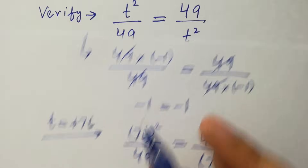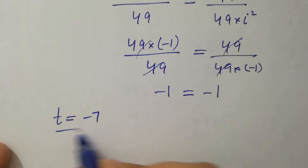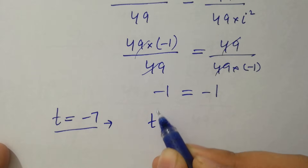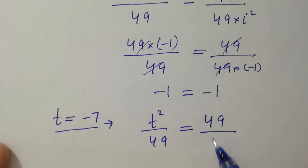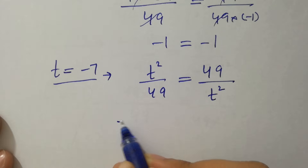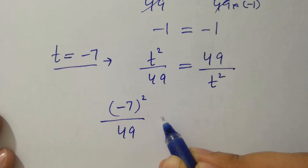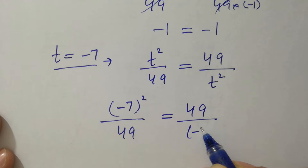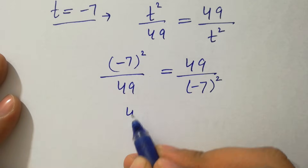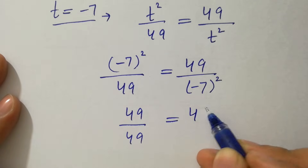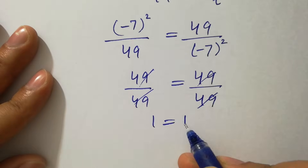Now putting t = −7 into the equation: (−7)² over 49 equals 49 over (−7)². Since 2 is even, (−7)² equals 49. So we get 49 over 49 equals 49 over 49, which gives 1 equals 1. Verified.